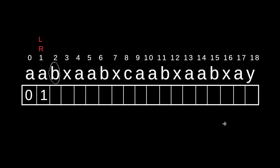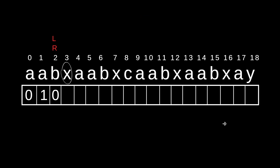Now I will increment. L and R will also increment. This value is not equal — directly put 0. Now this will increment again. L and R will also increment, meaning L and R reinitialize to the ith value. This value is not equal — directly put 0.